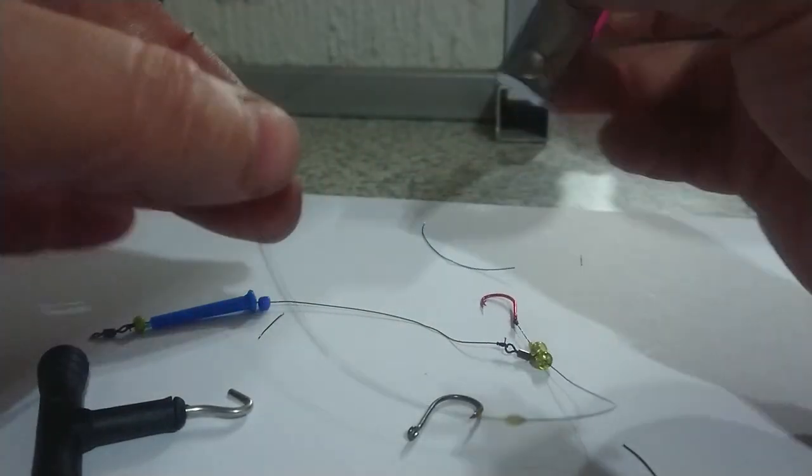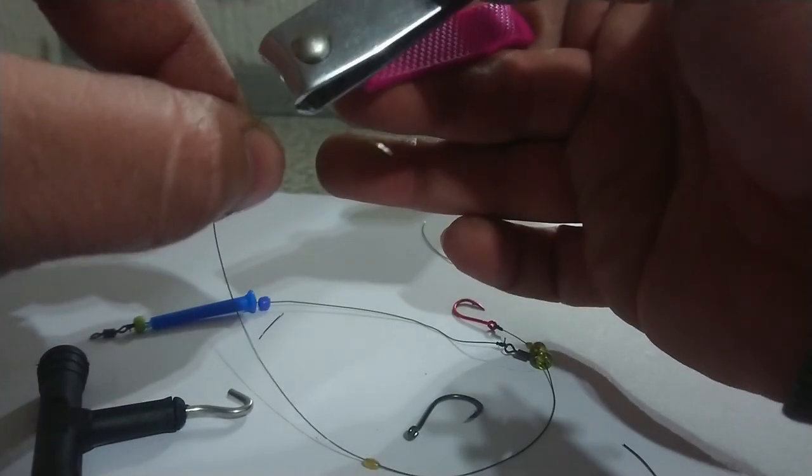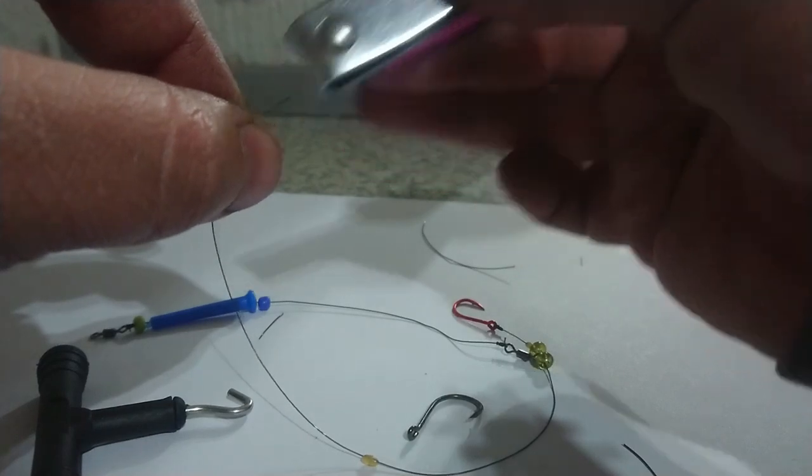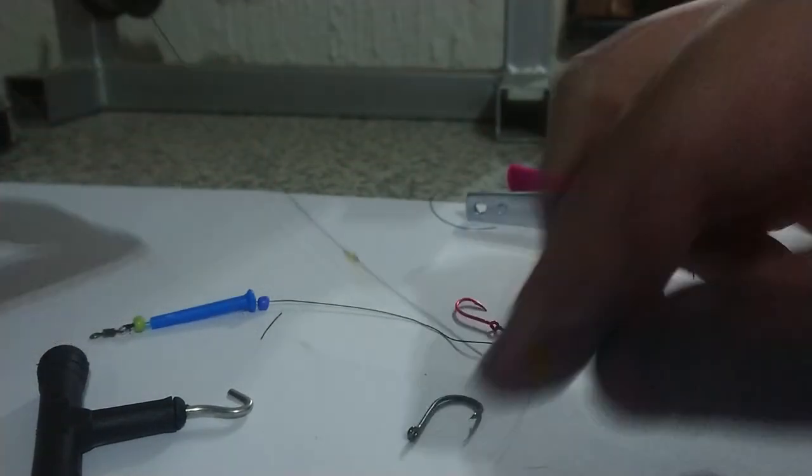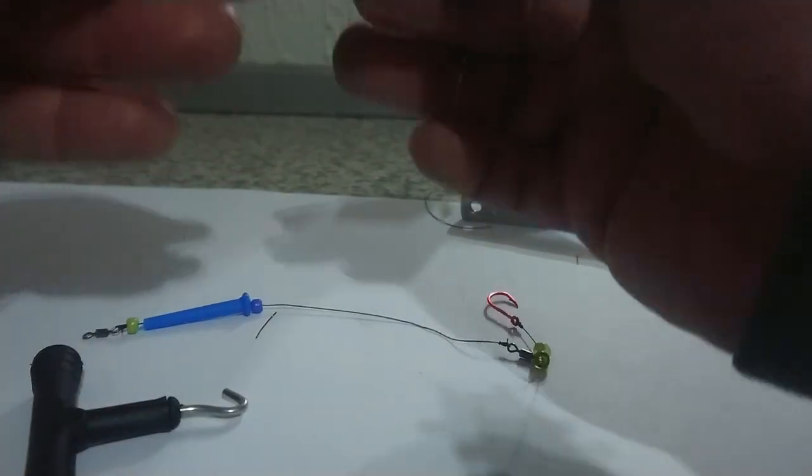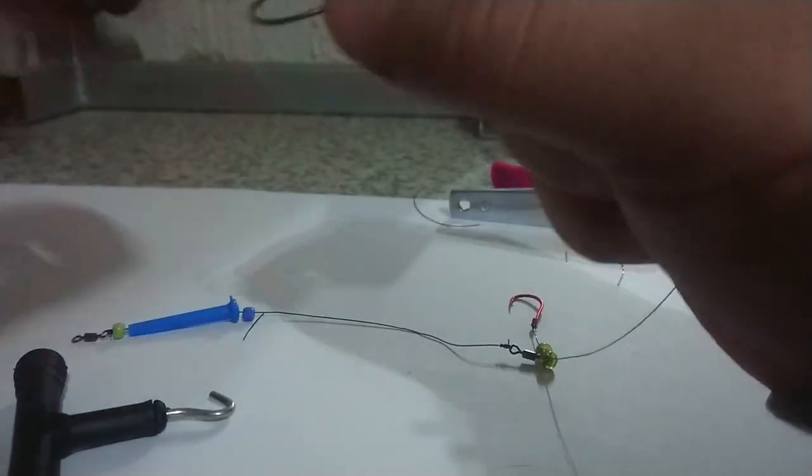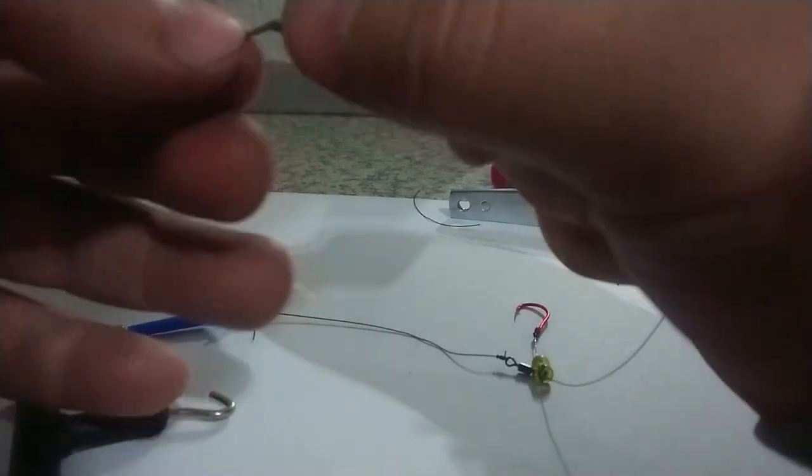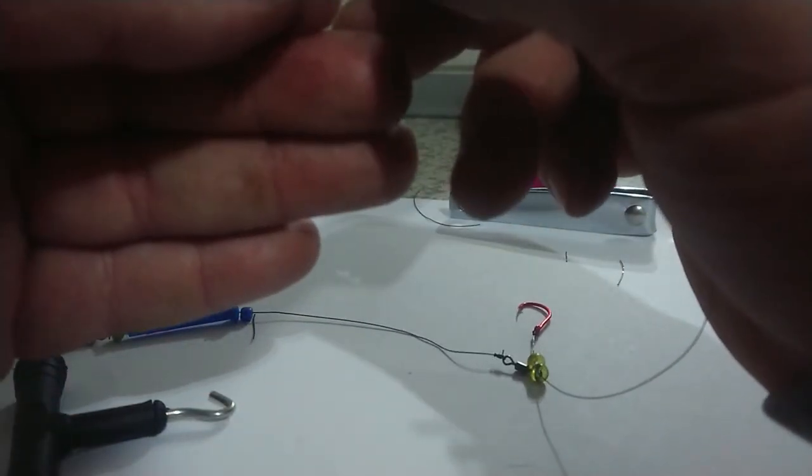Then for safety sake, just cut it off there. You don't want that on your line or on your thing. It becomes a weak link. Perfect, so we do another singe knot.